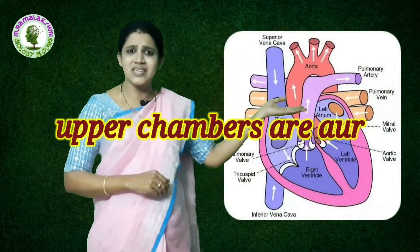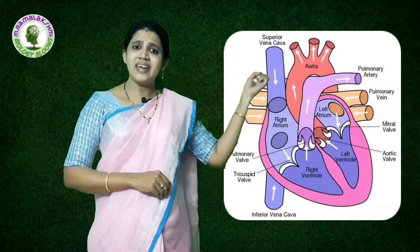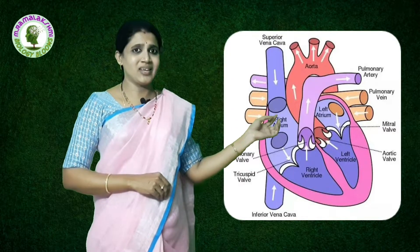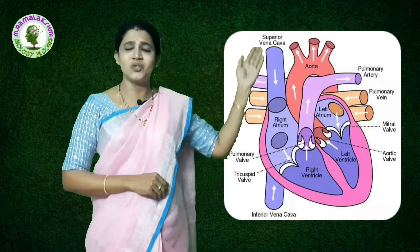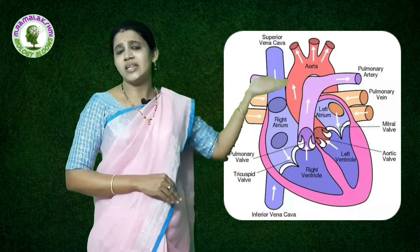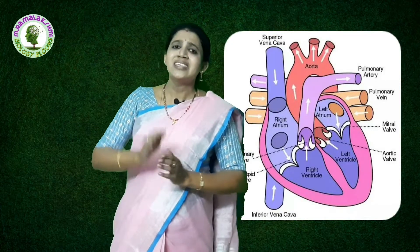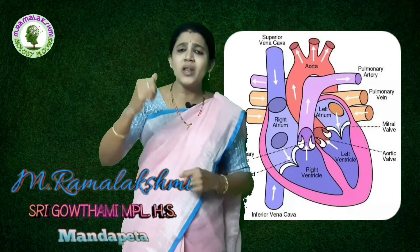To summarize the structure of the heart: the heart is a muscular organ, fist-sized, located in the thoracic cavity in between the lungs. It has four chambers — upper chambers are auricles, lower chambers are ventricles: right auricle, left auricle, right ventricle, left ventricle. The tricuspid valve guards the right auricle to right ventricle, and the bicuspid valve guards the left auricle to left ventricle. The right auricle connects to superior and inferior vena cava, the right ventricle to pulmonary artery, the left auricle to pulmonary veins, and the left ventricle to the aorta. In the next class we will discuss how blood circulates through the heart.